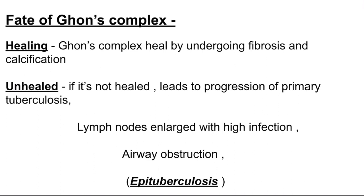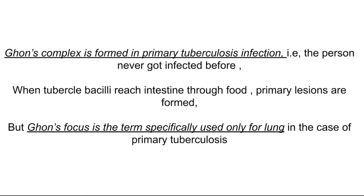What is the fate of this Ghon's complex? It can either undergo healing or remain unhealed. It undergoes healing by fibrosis or calcification. In the case of an unhealed Ghon's complex, it leads to progression of primary tuberculosis — the lymph nodes are enlarged due to high infection by the bacilli, which can also lead to airway obstruction. This is called epituberculosis.